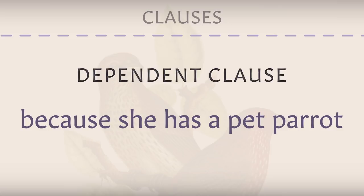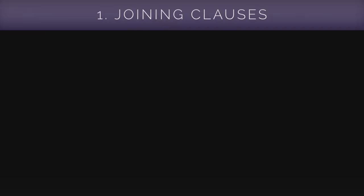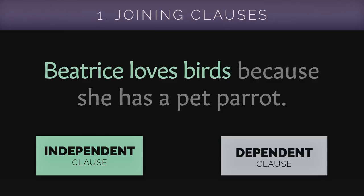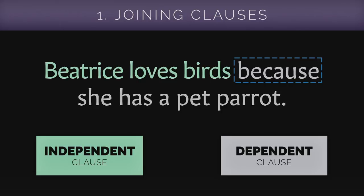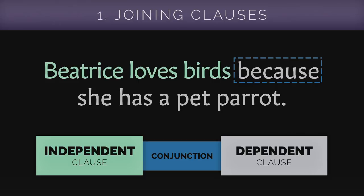Multiple clauses can be used together to create a sentence. If we combine our independent and dependent clauses, we have a complete sentence. These clauses are joined by the word "because," which is a conjunction. Conjunctions are used to connect clauses. In certain cases, a comma must be used when combining clauses. A comma is not necessary in our first example because of the conjunction; however, if the dependent clause is first, a comma is needed.